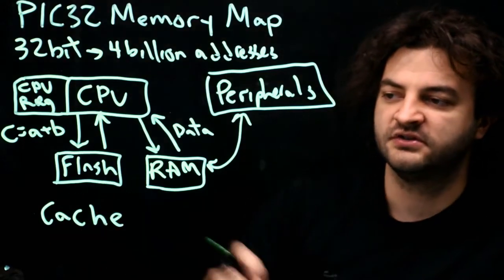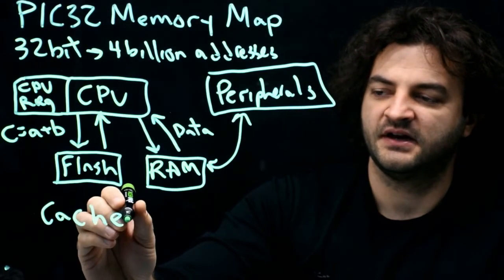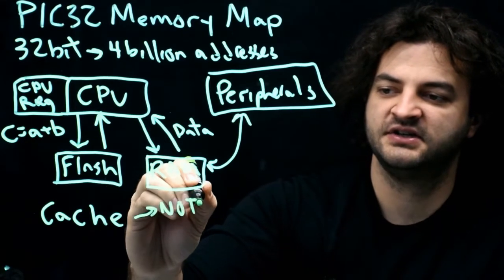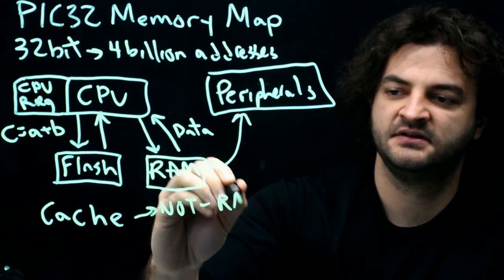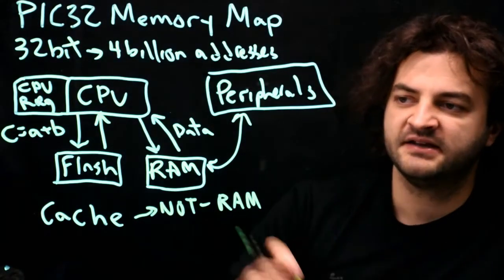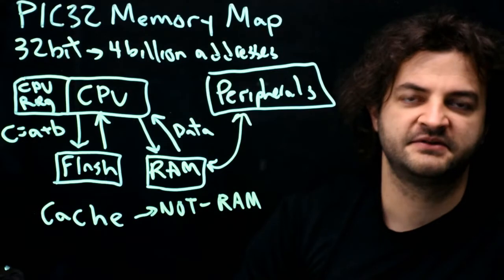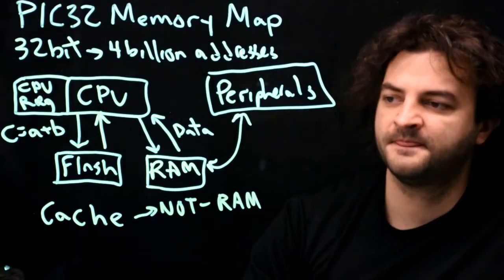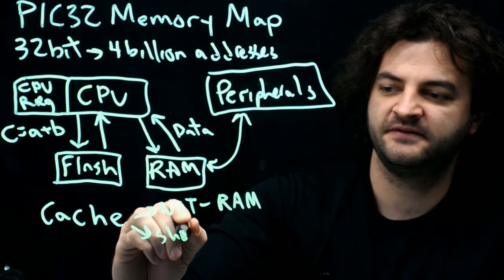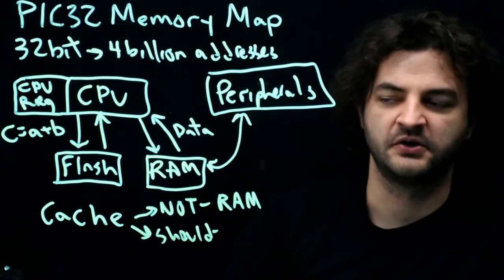But we need to be able to specify what variables should be able to be cached and what shouldn't be cached. So what shouldn't be cached? Sometimes RAM. One reason why we might not want to cache RAM, although we can cache RAM, is that the RAM is actually very fast. The RAM is accessible within one clock cycle.